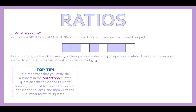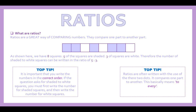Top tip: it's important that you write the numbers in the correct order. If the question asks for the shaded to white squares, you must write the number for shaded squares first, then the number for white squares. Many students fail to comply with this simple rule. Ratios are often written with two dots, meaning 'to every'. If you added these two numbers together, you would get the whole thing.